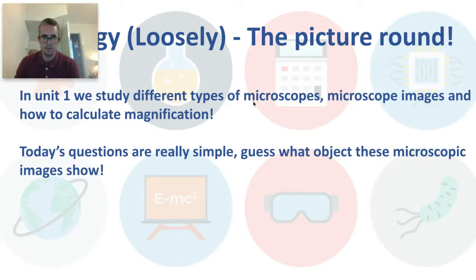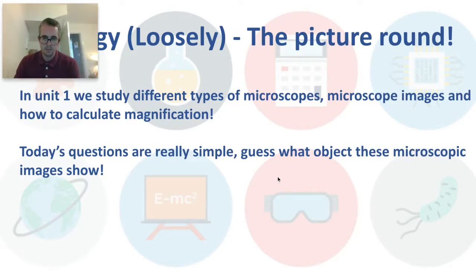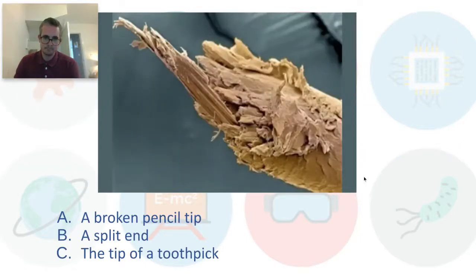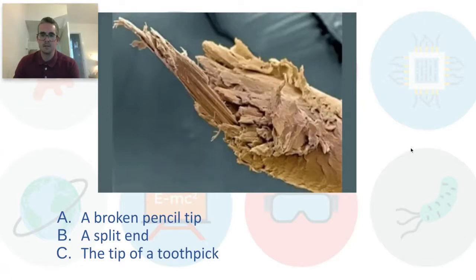So it's really, really straightforward. All that you need to do is guess what object is under the microscope on the images which follow on this PowerPoint. For example, our first image — you have to say is it a broken pencil tip, split ends, or the tip of a toothpick — and there are several more images like this which you need to have a go at.